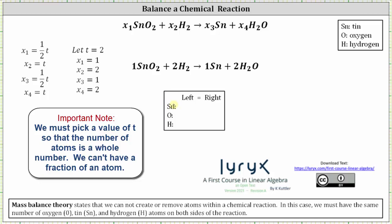Let's verify we have the same number of atoms of tin, oxygen, and hydrogen on both sides of the reaction. On the left we have one atom of tin; on the right we also have one. Looking at oxygen, we have two atoms on the left and two on the right — a coefficient of two times one atom gives two, so two equals two. For hydrogen, we have four atoms on the left and four on the right. So the chemical reaction is balanced. I hope you found this helpful.